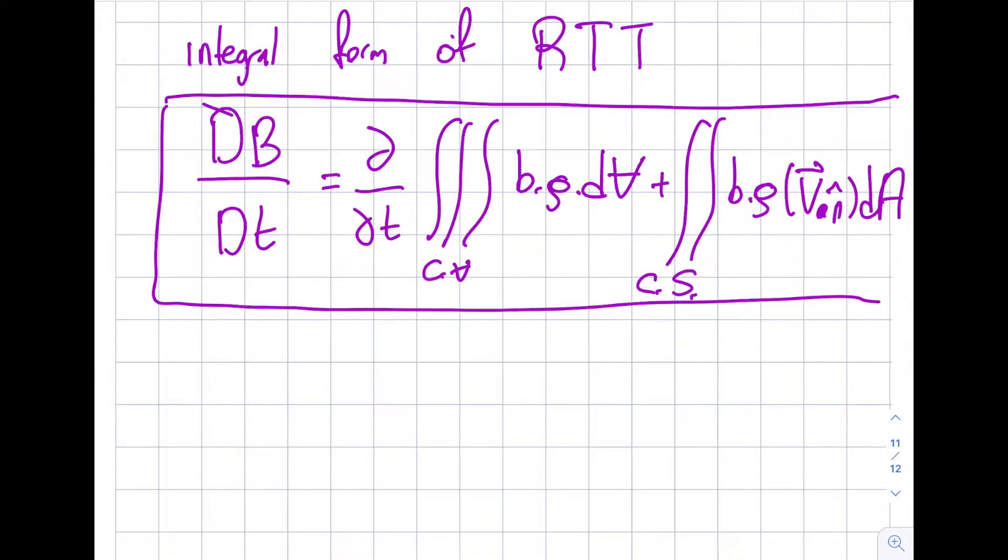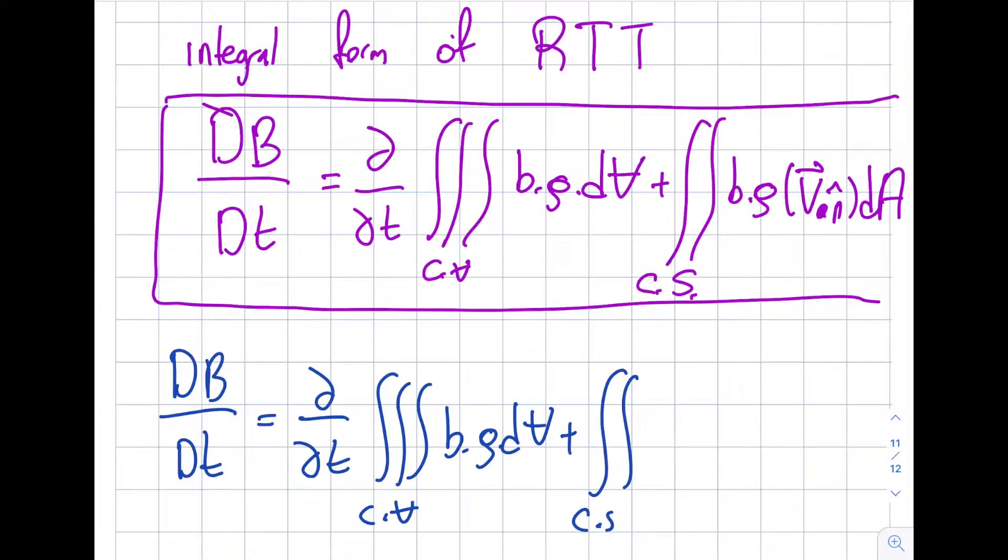First thing I want to highlight is when you look at other books you may see this written like this: DB/Dt equals del/del t triple integral over control volume b rho dV, plus control surface b rho, and this part may be different, w dot n dA.